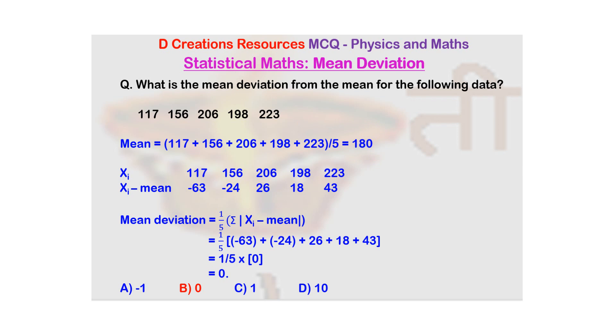Now for every point, you will need to see what is the distance from reference point 180. If it's 117, 117 minus 180 is -63. Similarly, 156 minus 180 is -24, 198 minus 180 is 18, 206 minus 180 is 26, and 223 minus 180 is 43.